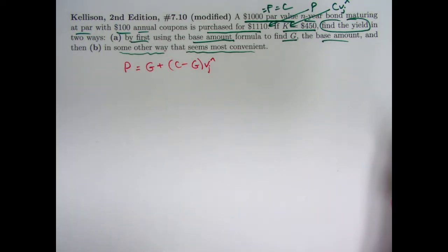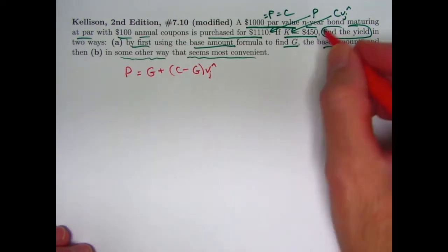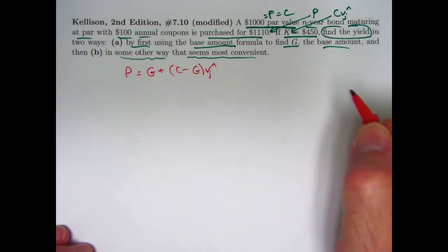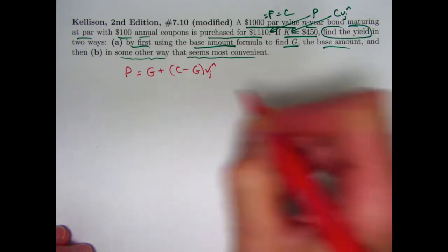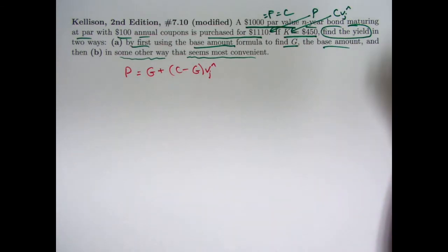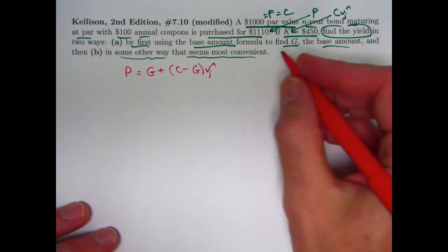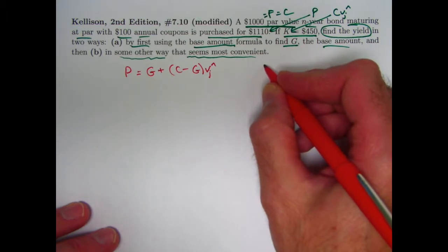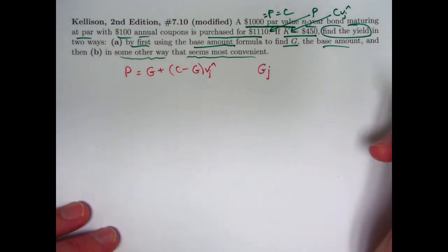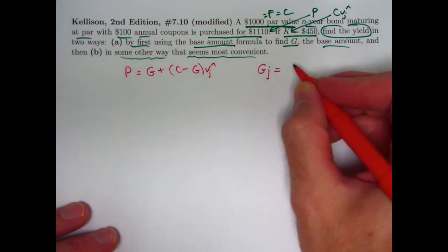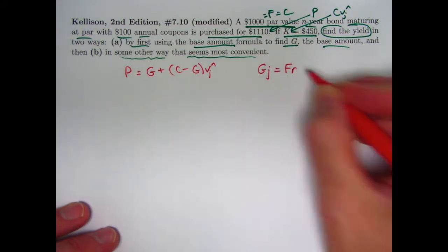That is the base amount formula. We know what C is. If you think about it, we can figure out what V to the N is. We could use that to find capital G. How is that helpful? Well, capital G is very intimately related with the yield. Capital G times the yield is equal to the coupon amount F times R, which is 100 here.